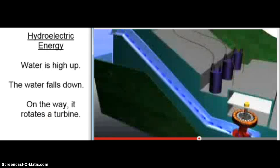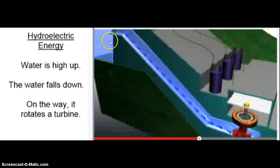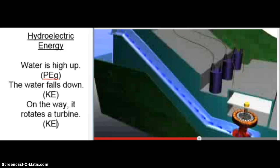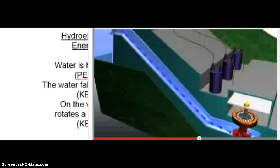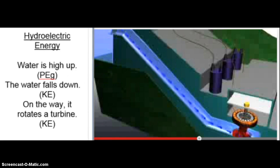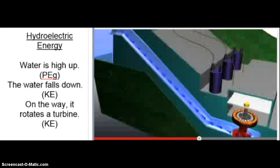So what's the energy transformation for hydroelectric energy? The water starts high up — it has gravitational potential energy. Then it falls down and gains kinetic energy. On the way, it rotates a turbine, producing rotational kinetic energy of the turbine.